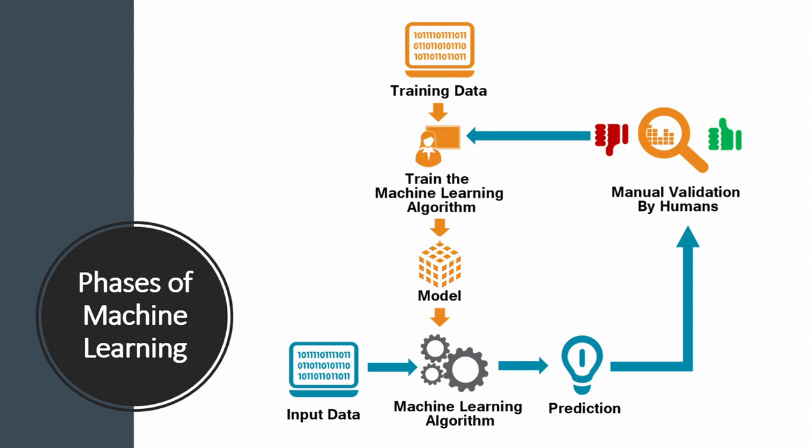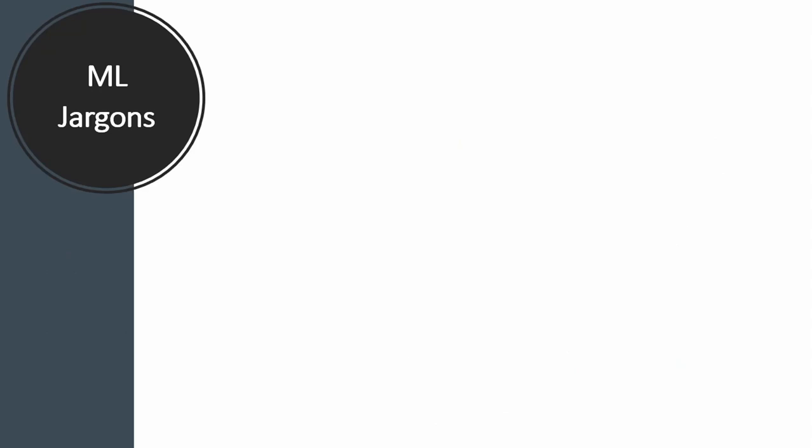If the output matches what is expected in manual validation, then we can deploy it in production. If not, we retrain the model again and the cycle of phases starts over. As a machine learning developer, these are the kinds of keywords you will use.